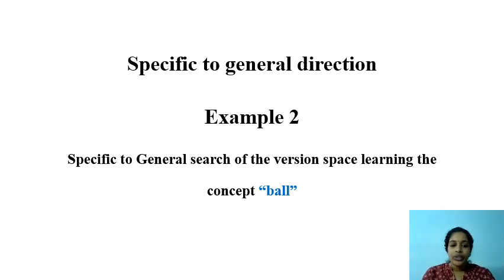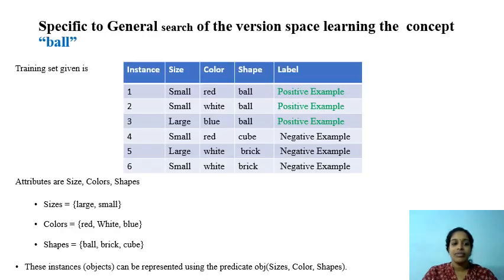In this video we are going to discuss the specific-to-general direction method to find version space. The example here is to find a version space related to the concept 'bowl'.